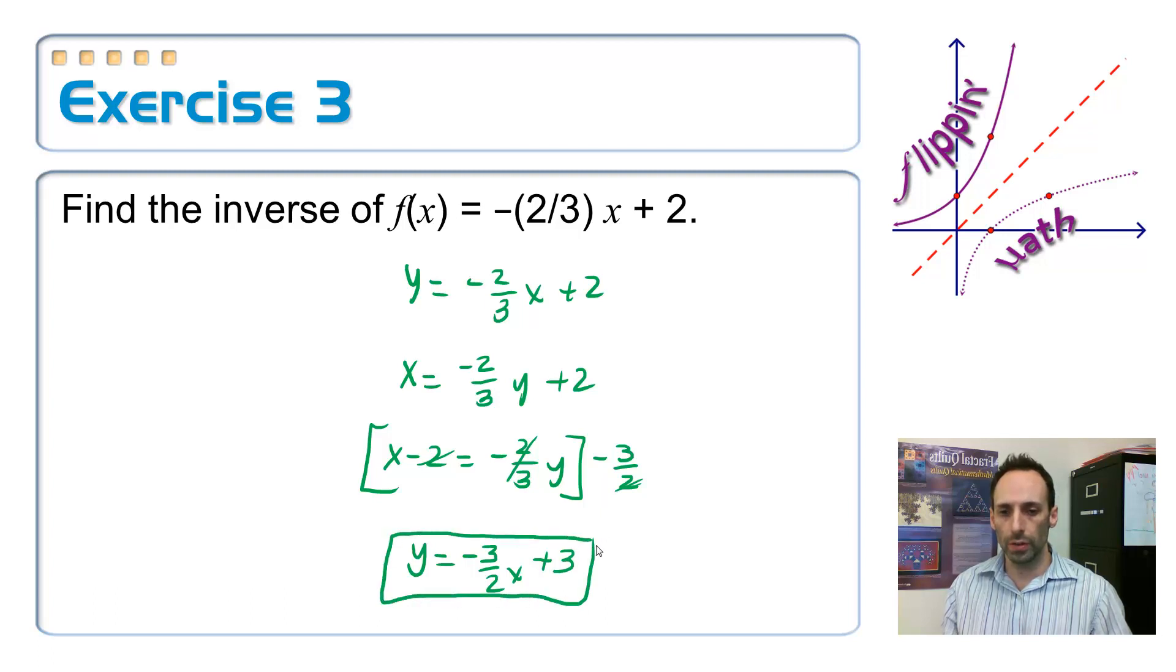So here is the inverse. So what would happen if you were to take this function and stick it in for x in that function? Well, I'd do that composition, everything would cancel out, and I would get x back. Those two things should undo each other.